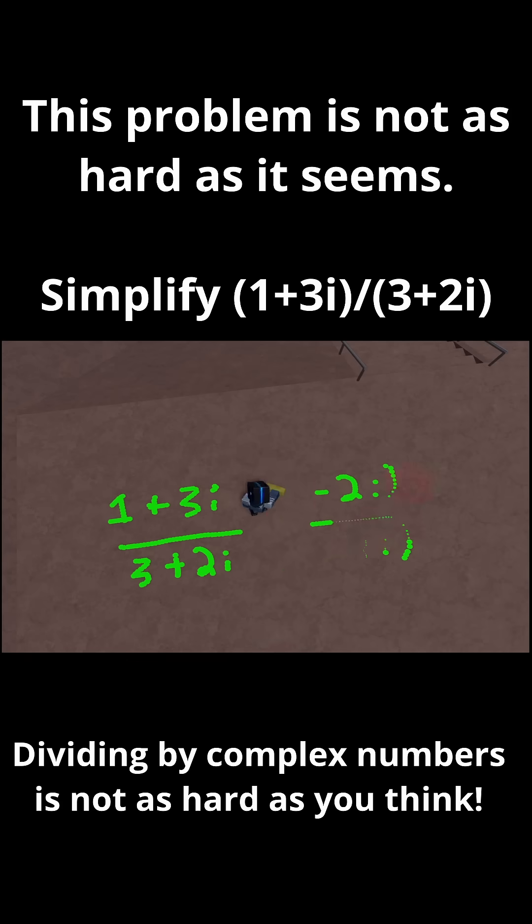So now let me just write this as one big fraction. So I'll have 1 plus 3i times 3 minus 2i. And then on the bottom, we'll have 3 plus 2i times 3 minus 2i.